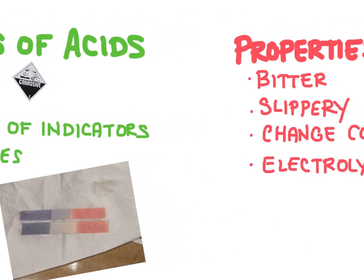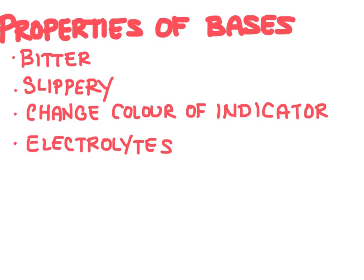Now acids have kind of an arch nemesis and we call these things bases. A base can neutralize an acid. So bases are kind of considered to be the opposite of an acid.